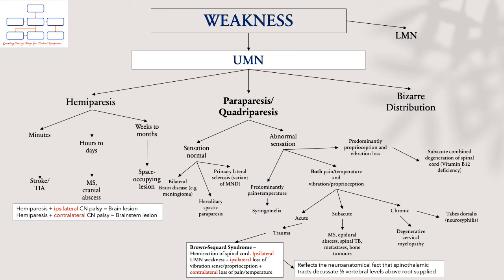In subacute presentations, this will suggest MS, epidural abscess, spinal TB, spinal metastasis, or bone tumours. Metastases and bone tumours could also lead to a chronic presentation. In chronic progressive presentation, it will suggest degenerative cervical myelopathy, which contributes to weakness and sensation loss from chronic compression to the cervical spine. Urgent neurosurgical referral is advised if you suspect DCM. The other thing to consider would be tabes dorsalis, which is neurosyphilis.